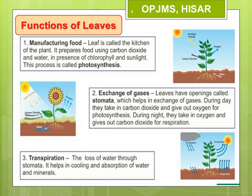The next function of leaves is transpiration. Plants absorb a lot of water from the soil, but very little water is used up in photosynthesis. The rest of the water is lost to the atmosphere in the form of water vapours through stomata. This loss of water through stomata is known as transpiration. Transpiration is very important for the plants as it helps in cooling the plant body and maintaining its temperature. It also helps in getting rid of excess water and in the conduction of water and minerals by creating an upward pull.